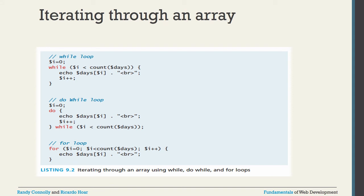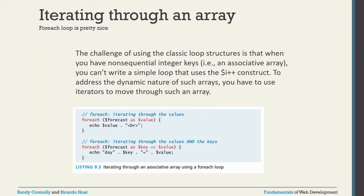To iterate through an array and fetch all values one by one, you can use a while loop, do-while loop, or for loop. First, check the size of the array using the count() function, then iterate using an index variable that increments each step to pass values one by one.